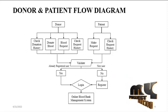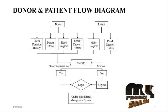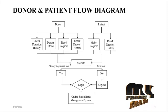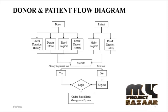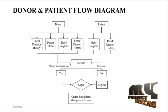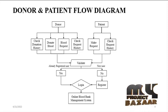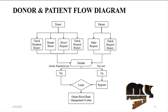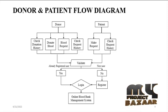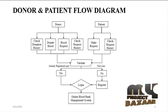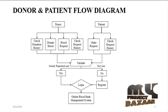In the donor and patient flow diagram, both the donor and patient must register in the Online Blood Bank Management System and then log in. For donors, they can check their donation history, donate blood, give a blood request to the admin, and check request histories. For patients, they can make a blood request and check their request history.